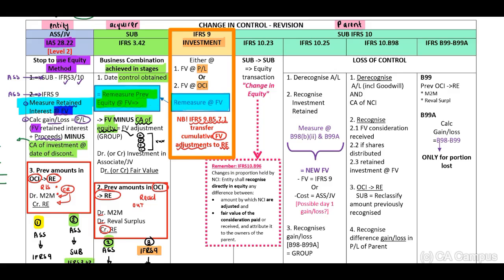The next important rule is your red blocks. Block number one is IFRS 28 — previous amounts in OCI to retained earnings. Block number two, IFRS 3 paragraph 42 — previous amounts to retained earnings. Number three: if there are any amounts previously recognized relating to fair value adjustments, transfer to retained earnings.